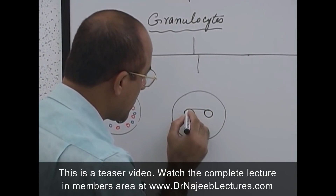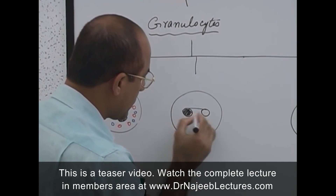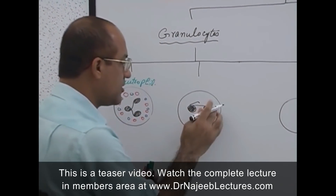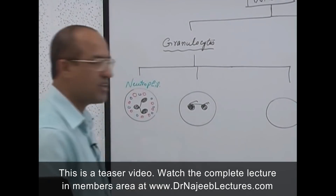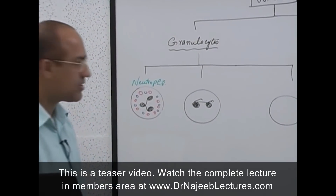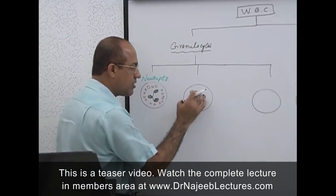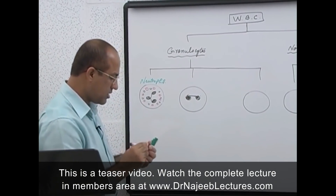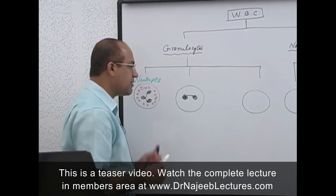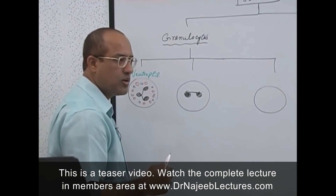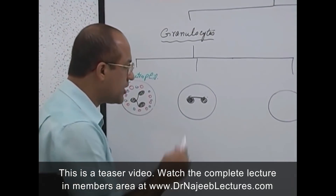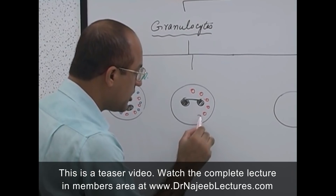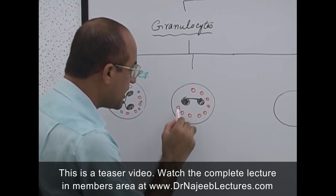Eosinophils classically have a bilobed nucleus — I always feel they look like they are wearing glasses. Eosinophils have specific granules which are stained by eosinophilic dyes, which are acidic dyes.